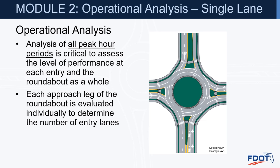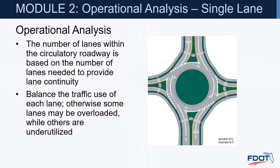Each approach leg of the roundabout is evaluated individually to determine the number of entry lanes required. The number of lanes within the circulatory roadway is based on the number of lanes needed to provide lane continuity — the circulatory roadway does not need to be consistent. A single-lane entry only needs single-lane circulating, and a two-lane entry yields two lanes circulating. One two-lane entry leg does not mean the rest of the roundabout needs to be two lanes. We need to balance traffic use of each lane; otherwise some lanes may be overloaded while others are underutilized.